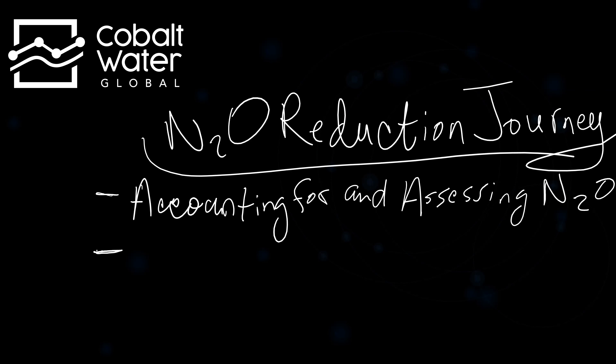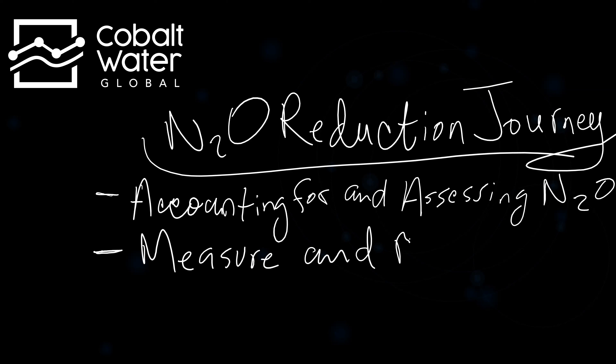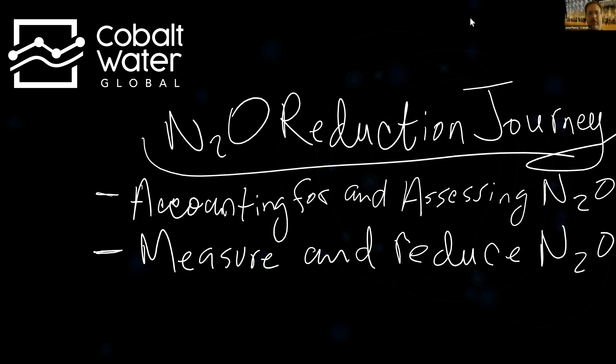Once we've done that, we would be ready to go and measure and reduce N2O. By measuring, we get to verify what the emissions actually are. We should already have a good idea, but when we physically measure, we get to see what the actual emissions are. At the same time, this gives us data we can use to train a machine learning model that we can then use to look at the historical data and seasonal variation, because we don't need to measure for a full year to see what the seasonal variation is.